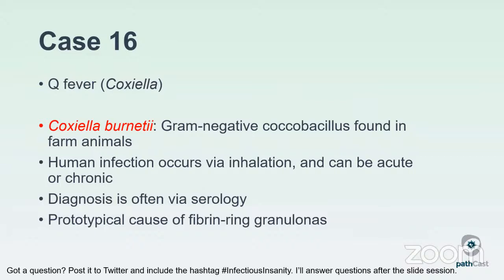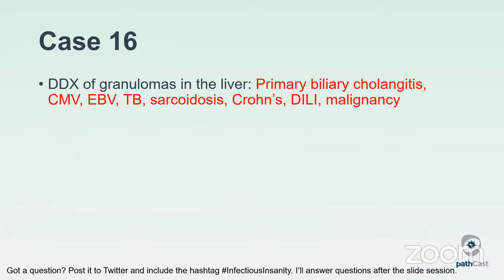The differential for granulomas in the liver is extremely broad: primary biliary cholangitis (involving portal tracts or lobules), CMV, EBV, tuberculosis, sarcoidosis, Crohn's granulomas in the liver (rare), drug-induced liver injury, and in some patients with malignancy.